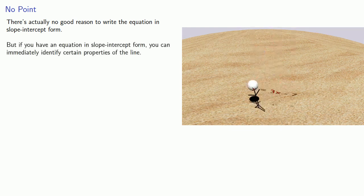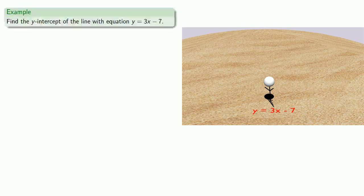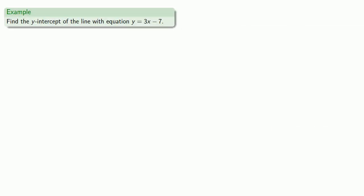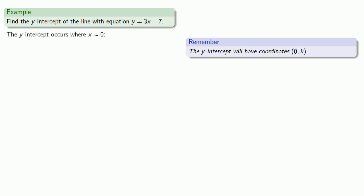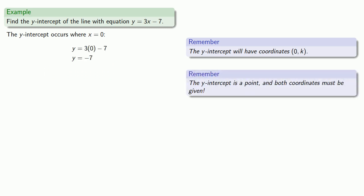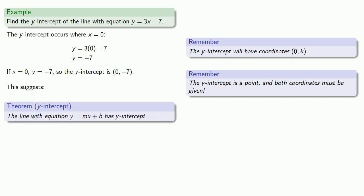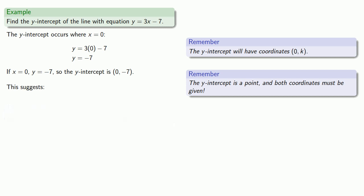On the other hand, if an equation in slope-intercept form should fall out of the sky and hit you on the head, you can immediately identify certain properties of the corresponding line — and I'd also watch where I was walking. For example, suppose you're given y = 3x − 7 and you want to find the y-intercept. The y-intercept occurs when x = 0, so we substitute that in and find our y-value. The intercept is a point, so the intercept is (0, −7). This suggests a theorem, but memorizing theorems and formulas is actually the worst way to learn mathematics. It's more important to understand concepts, so you don't actually need the theorem as long as you keep in mind what the y-intercept is.